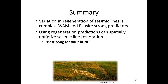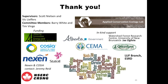In summary, the variation in regeneration of seismic lines was very complex. But we found that the wet areas mapping was a very strong predictor, as well as eco-site, particularly fens and bogs. Using these map products — such as regeneration predictions across the landscape — we can spatially optimize seismic line restoration to get the best bang for your buck, and benefit things like caribou and other biodiversity.